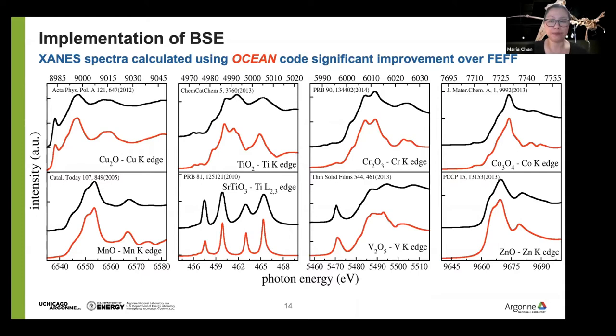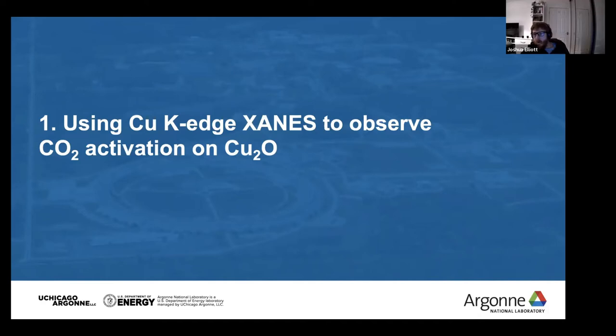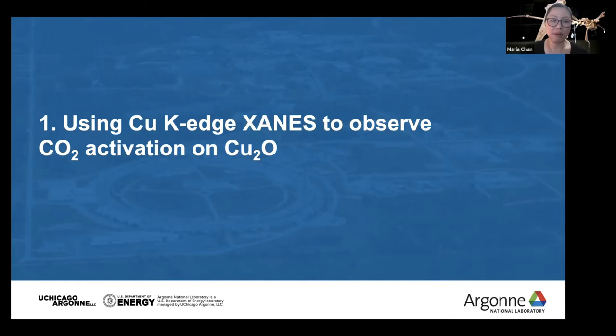Joshua Elliott asks: in the comparison between OCEAN and FEFF, assuming FEFF is also a GW-BSE code, are the starting Kohn-Sham wave functions the same? The answer is that FEFF is not a many-body perturbation theory code — it's a multiple scattering code using linear muffin-tin orbitals. It is amazingly fast compared to any DFT calculation and exceedingly fast compared to OCEAN. For the cost, FEFF is actually quite good.